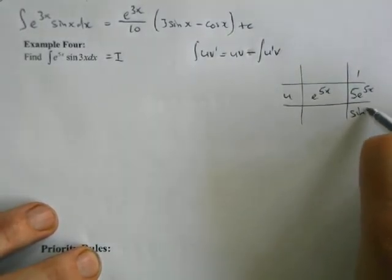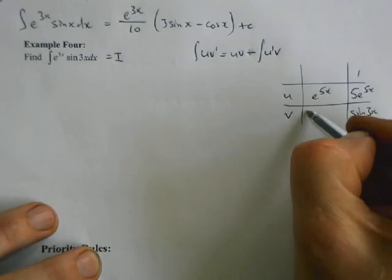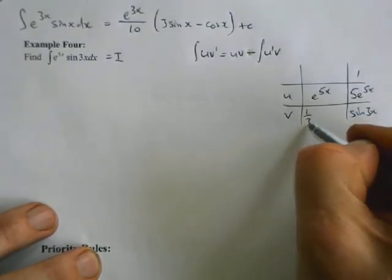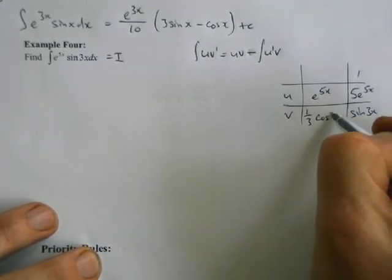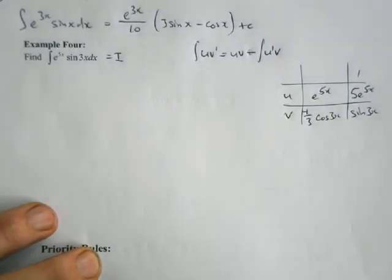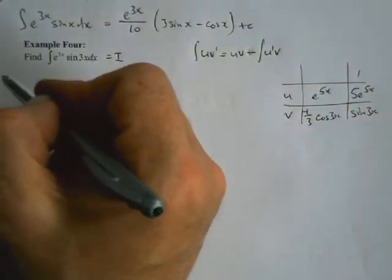The bit I'm left with is sine 3x. So when I integrate sine 3x, I get negative one third cos 3x, negative because sine integrates to negative cosine.